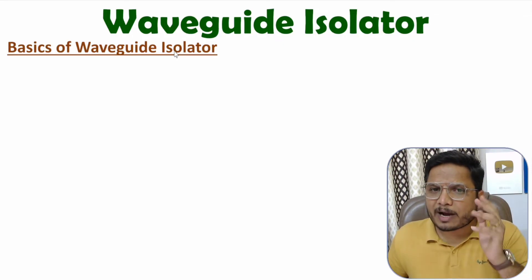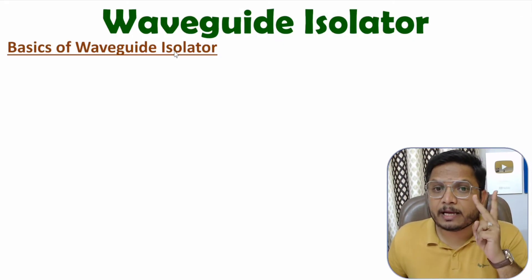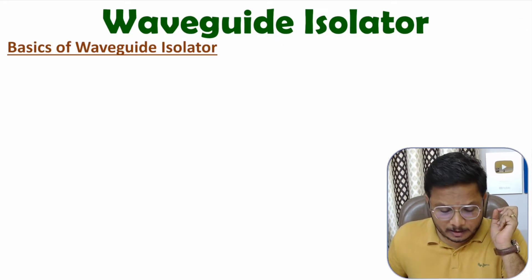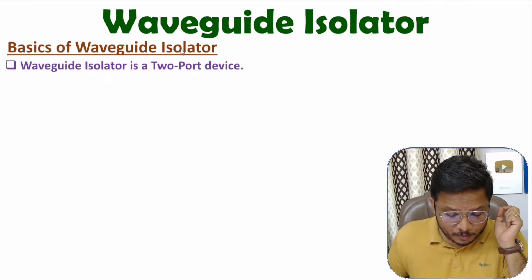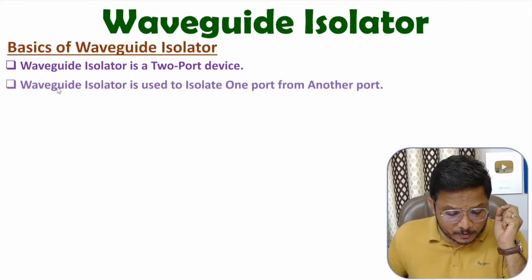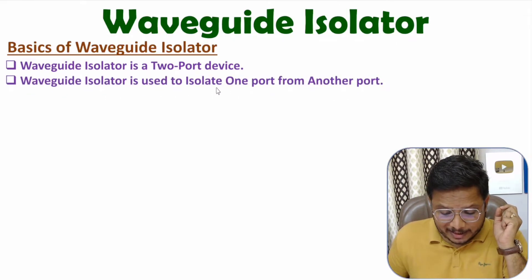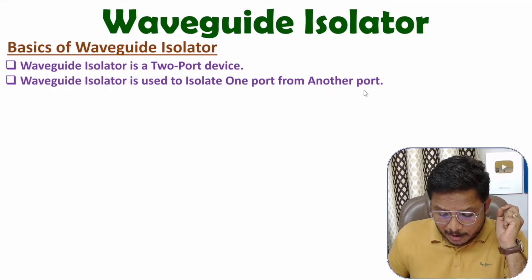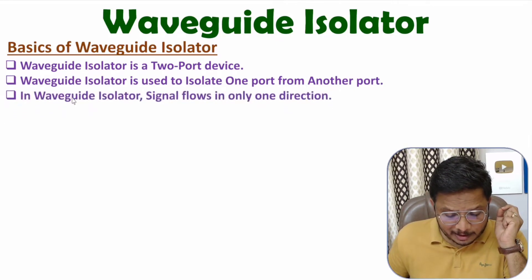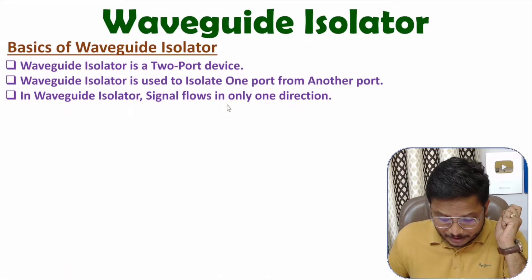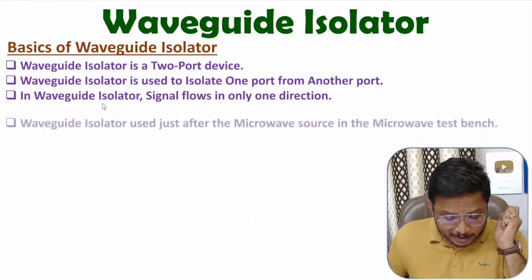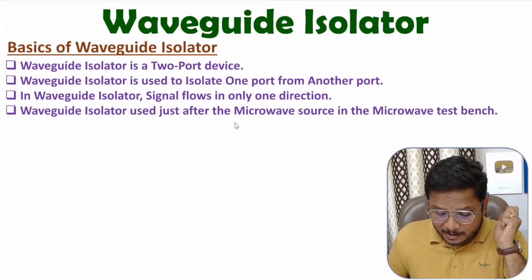Waveguide isolator is simply a two-port device. So with waveguide isolator, we have two ports. Using waveguide isolator, we can isolate one port from another port. In waveguide isolator, signal flows in only one direction. Usually, waveguide isolator is used just after microwave source in microwave test bench.